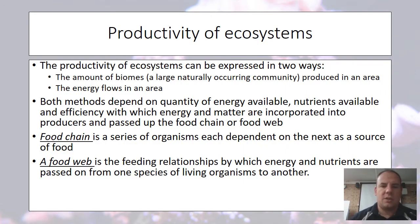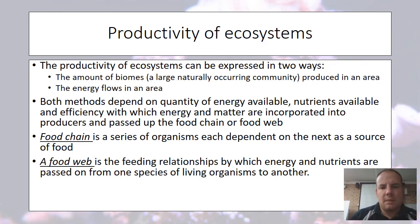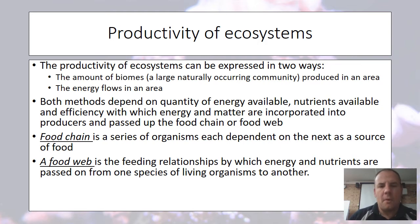When we look at ecosystems at risk and judge whether they're at risk or not, and look at ways of management, we look at the productivity of ecosystems. This can be expressed in two ways: the amount of biomass — a large naturally occurring community produced in the area — and the energy flows in that area. Both methods depend on the quantity of energy and nutrients and the efficiency with which energy and matter are incorporated into producers and passed up a food chain or web.